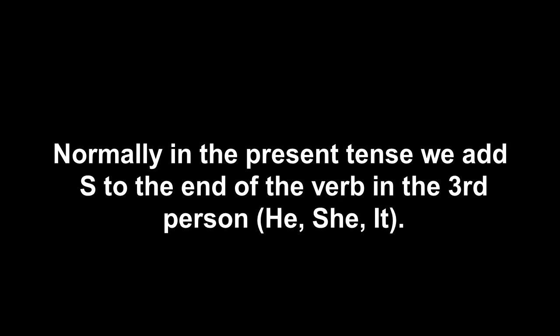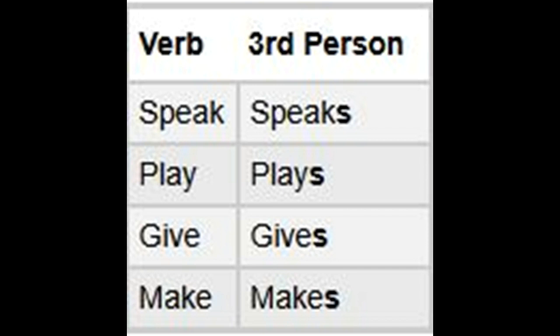Present tense third person English grammar rules. Normally in the present tense we add 's' to the end of the verb in the third person — he, she, it. For example: speak becomes speaks, play becomes plays, give becomes gives. He speaks three languages. She drinks coffee every morning. My dog hates my cat.